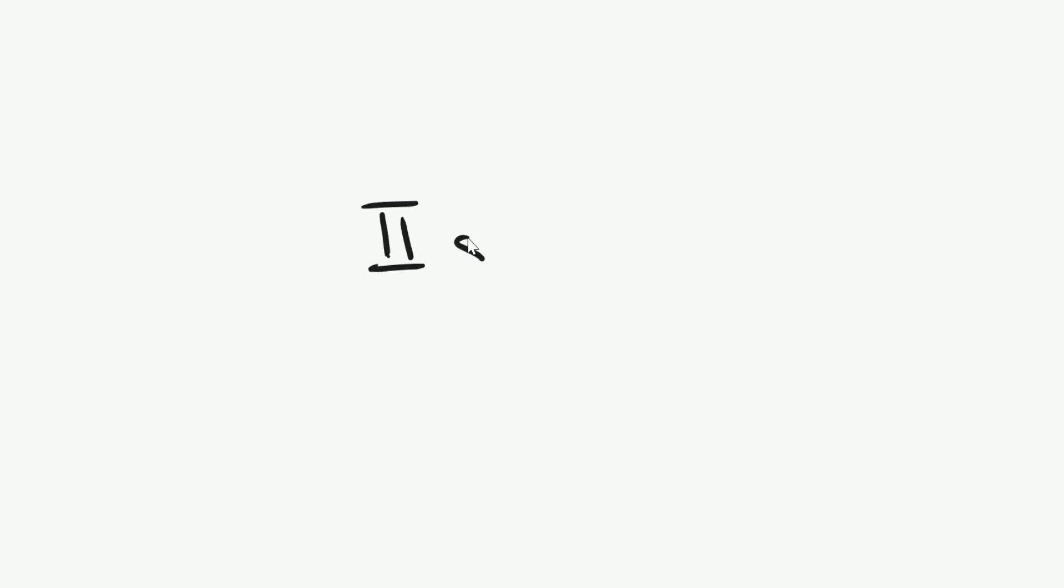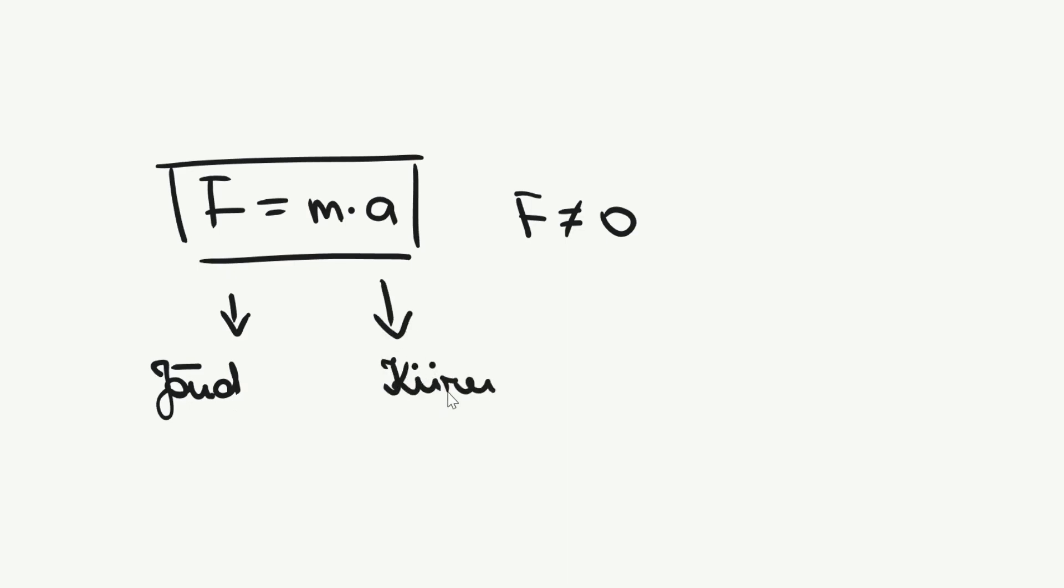Newtoni teist seadust nimetatakse dünaamika põhiseaduseks, kuna sellel on suur tähtsus mehaanika ülesannete lahendamisel. Dünaamika seadus ütleb, et kui kehale mõjuv jõud või resultantjõud on nullist erinev, siis liigub keha kiirendusega, mis on võrdeline ja samasuunaline resultantjõuga ning pöördvõrdeline kehakassiga. Kokkuleppeliselt on jõuühikuks Newton. Üks Newton on jõud, mis annab kehale massiga 1 kilogramm kiirenduse 1 meeter sekund ruudus. Et dünaamika põhiseadus selgemaks saada, lahendame selle põhjal mõned ülesanded.